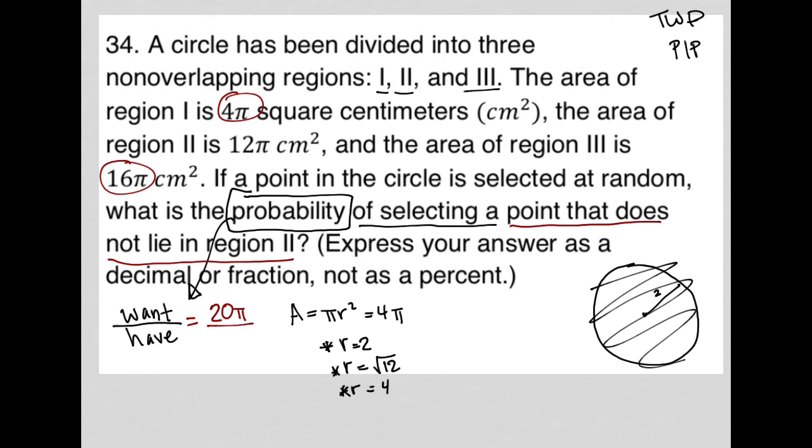Now, what do we have? Well, we have the entire circle, including region one, two and three. So that would be 4π plus 16π plus region two is 12π. So that would be 32π.